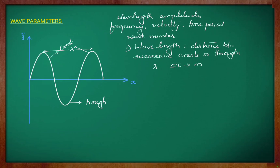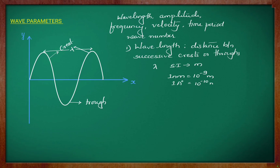There are other units which represent shorter wavelengths. It can be nanometre or angstrom. One nanometre is 10 to the power minus 9 meter, and one angstrom is 10 to the power minus 10 meter.